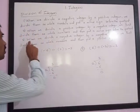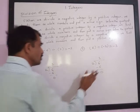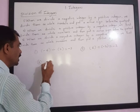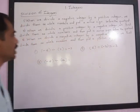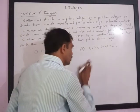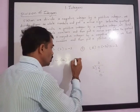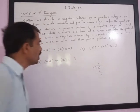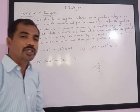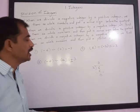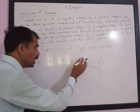Now the third rule: when we divide a negative integer by a negative integer — for example, negative 6 divided by negative 2 — we first divide as whole numbers: 6 divided by 2 gives quotient 3 and remainder 0. Then we put a positive sign. Even if you don't write a sign, it is considered positive. So whenever a negative integer is divided by a negative integer, we get a positive answer.